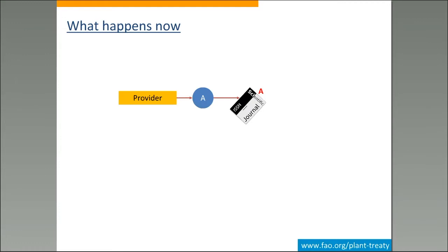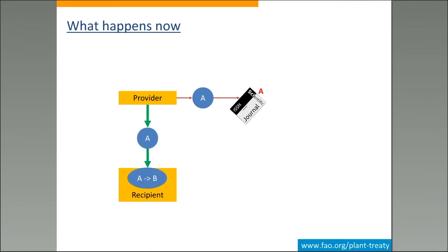Unfortunately, what we have now is this situation. We have the provider that has material A, and some research on this material results in a publication in a scientific journal. The citation of the material refers to A, which is the internal identifier that the provider has assigned to this material. On the other hand, the recipient receives material A from the provider and the first thing he does is assign his own local identifier. So in the recipient's collection, material A is identified by a different identifier called B.